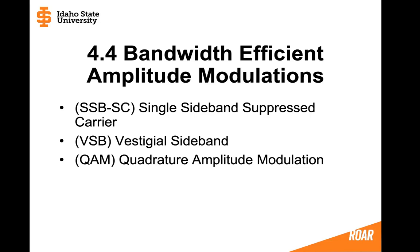Previously, we talked about two other types of bandwidth-efficient amplitude modulations — schemes meant to be more efficient than double-sideband amplitude modulation. The first was single-sideband suppressed carrier, which transmits just a single sideband, effectively using half the bandwidth. However, it required very troublesome filters. Then we discussed vestigial sideband amplitude modulation, a compromise between single-sideband and double-sideband suppressed carrier. Now we will discuss quadrature amplitude modulation, which transmits two messages simultaneously using the same bandwidth as double-sideband suppressed carrier amplitude modulation.